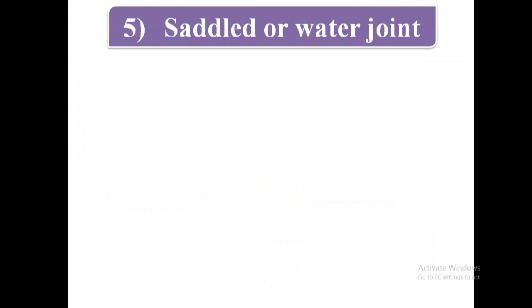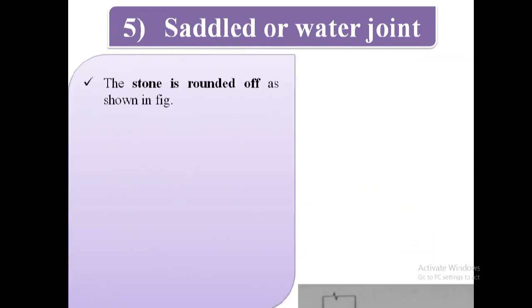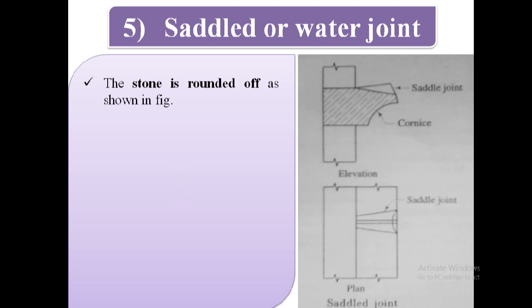Fifth type is saddle or water joint. The stone is rounded off as shown in figure. This is the plan of saddle joint and here, stone is rounded off.